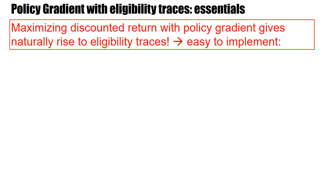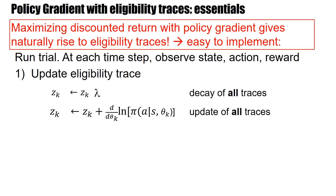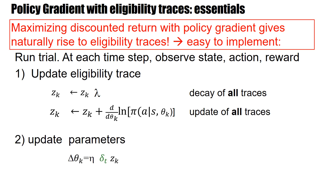The cool thing is that eligibility traces are really easy to implement. You just run a trial, and at each time step you observe state, action, reward and update your eligibility traces — letting them decay and increasing them with respect to derivatives of the log probabilities. Then you update the parameters with the momentary reward information at time t, which could be the TD delta if you subtract the baseline, or directly the reward at time t. It's a completely online algorithm.